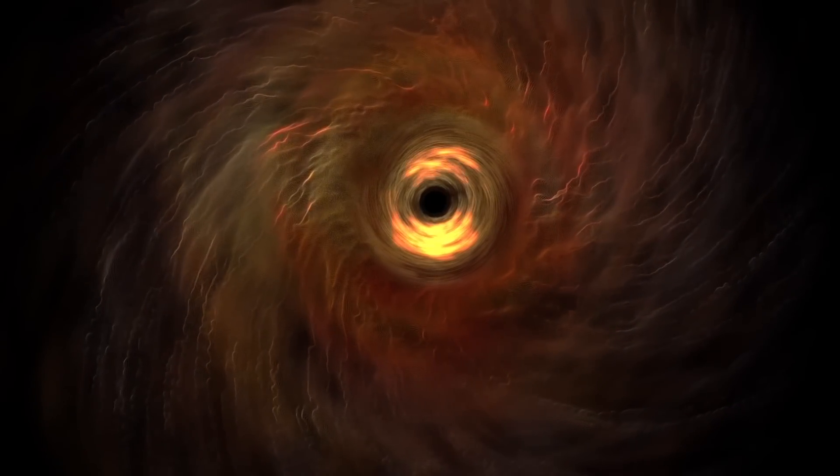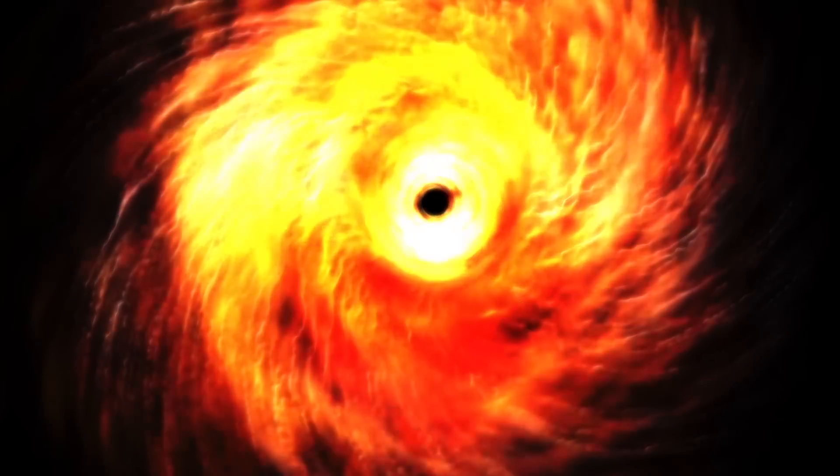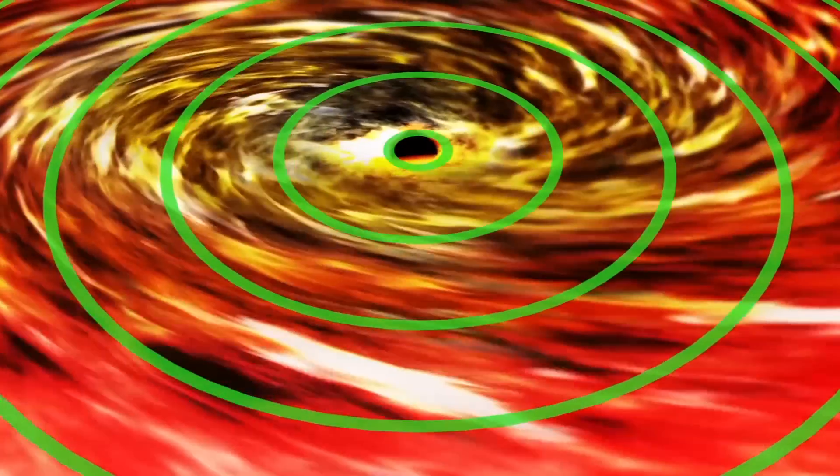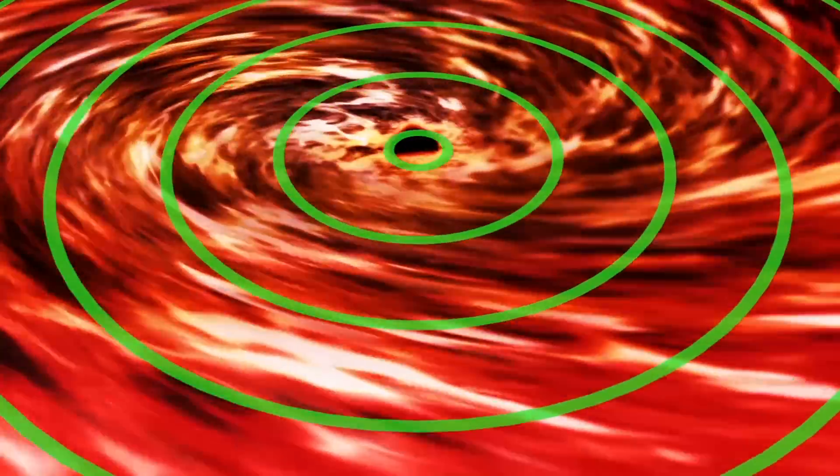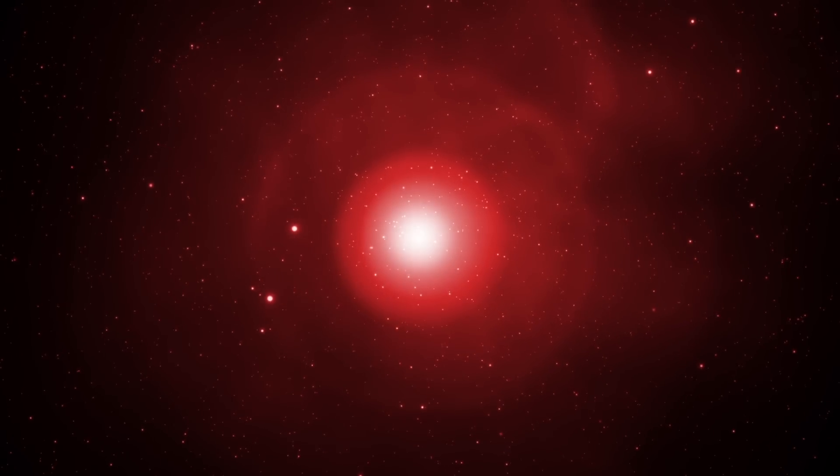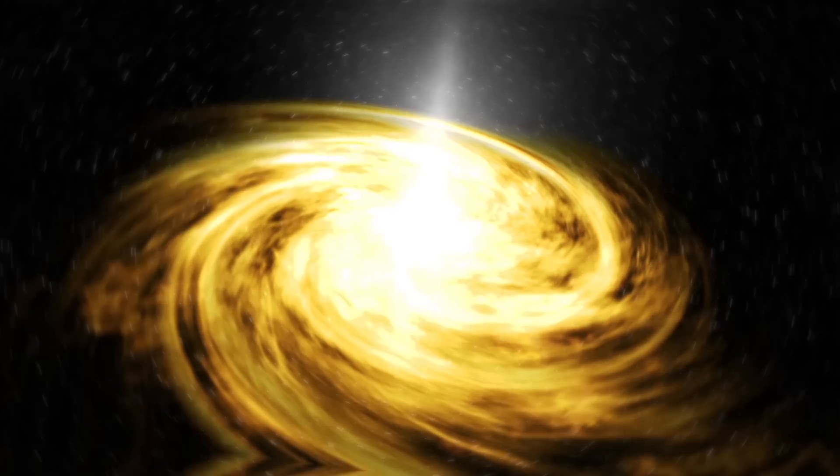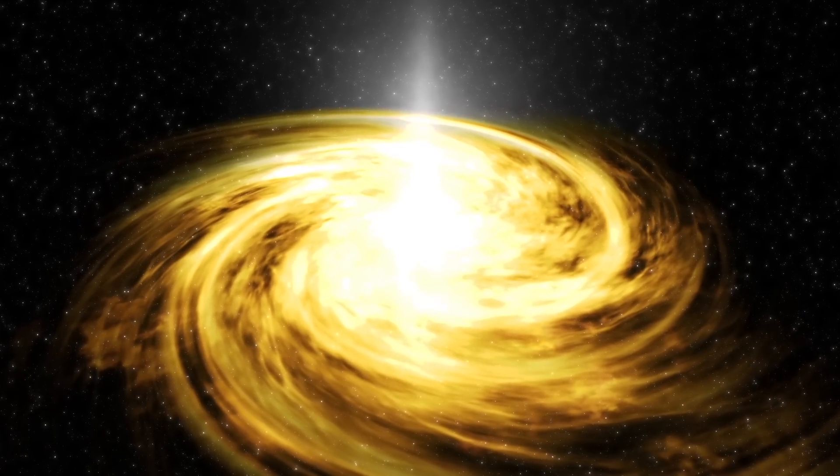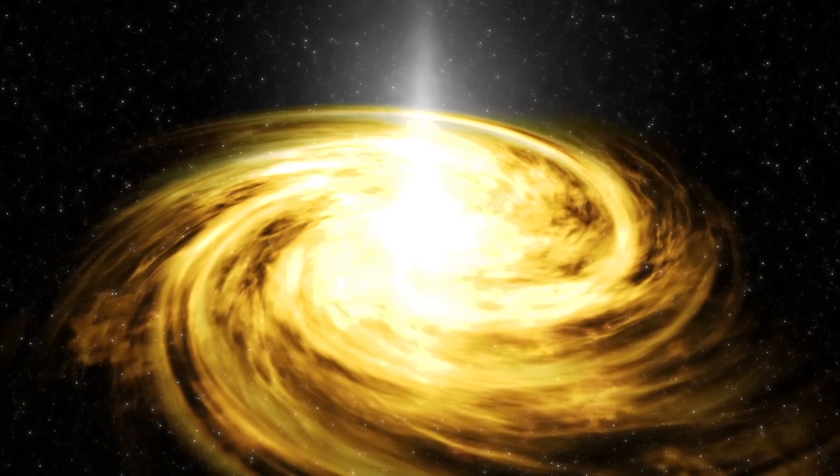The disk temperature reaches several million degrees. It emits ultraviolet and x-rays that heat up clouds of dust around the black hole. The red-hot clouds begin to radiate with infrared, turning the galaxy into the brightest object of its type in the universe.